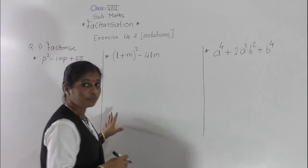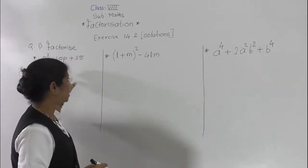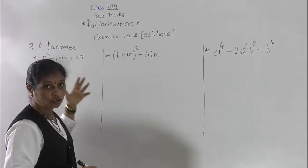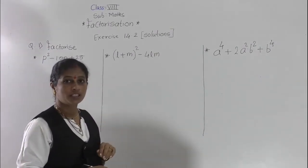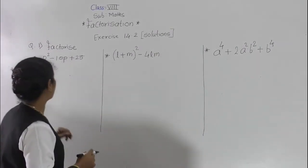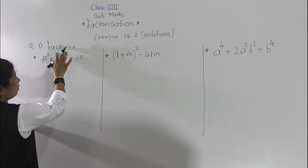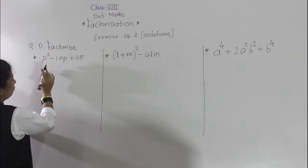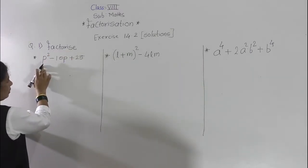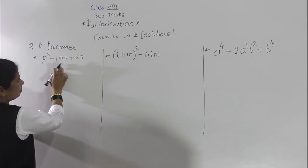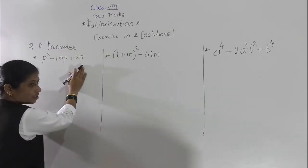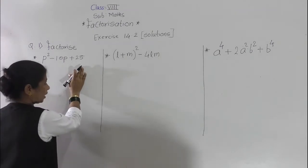Students, in this period we will see the solutions of the morning's examples. So, first we have to factorize p squared minus 10p plus 25.